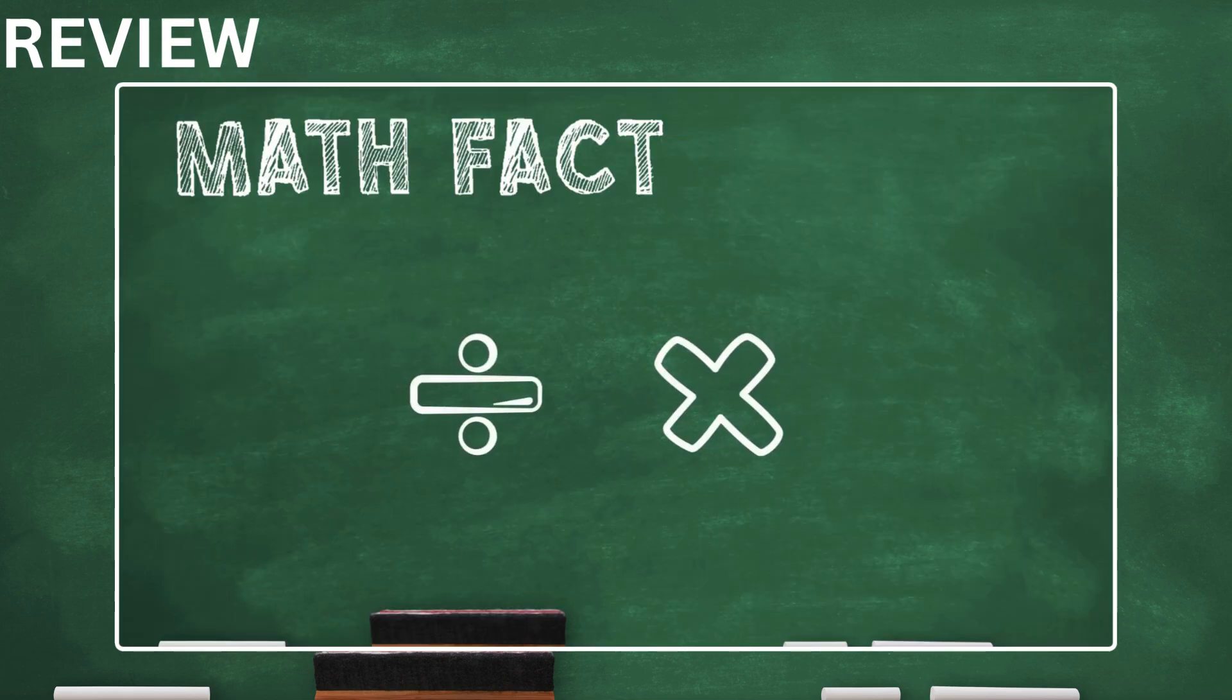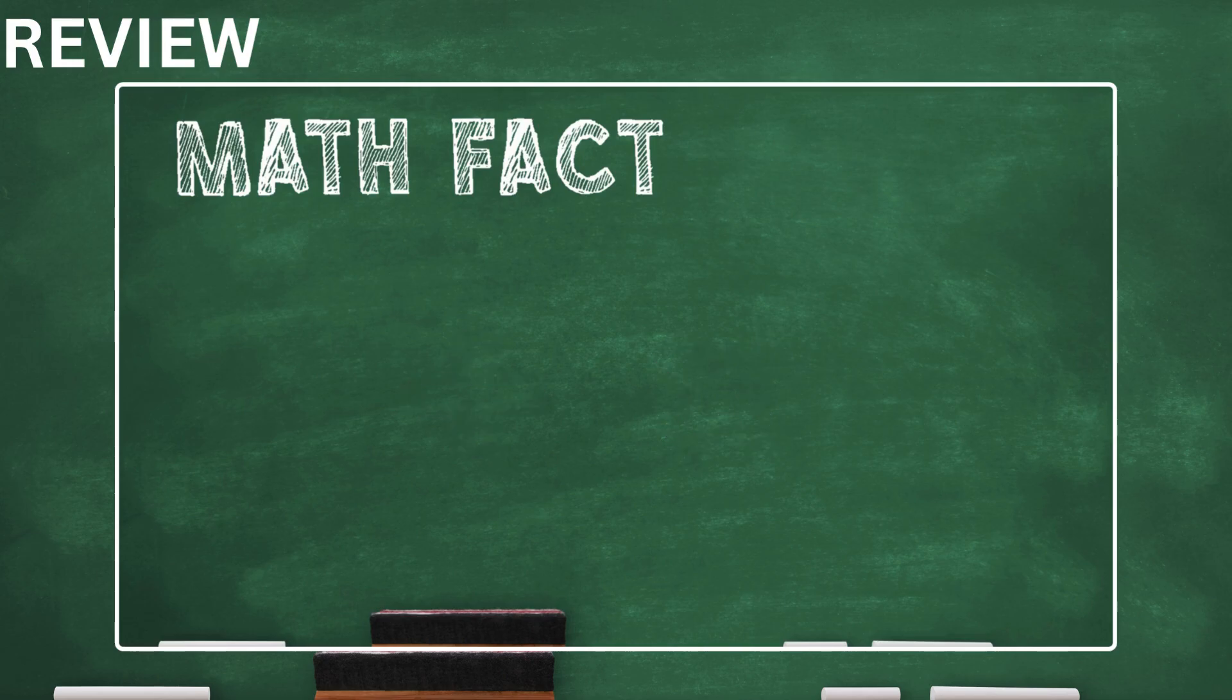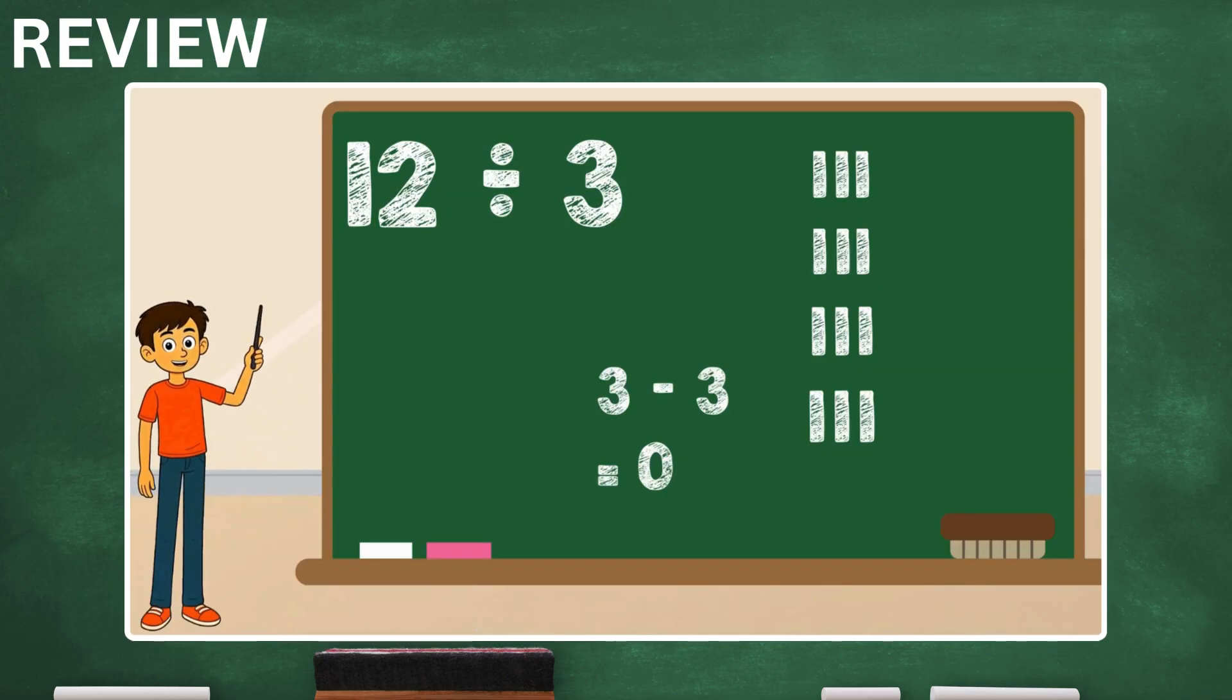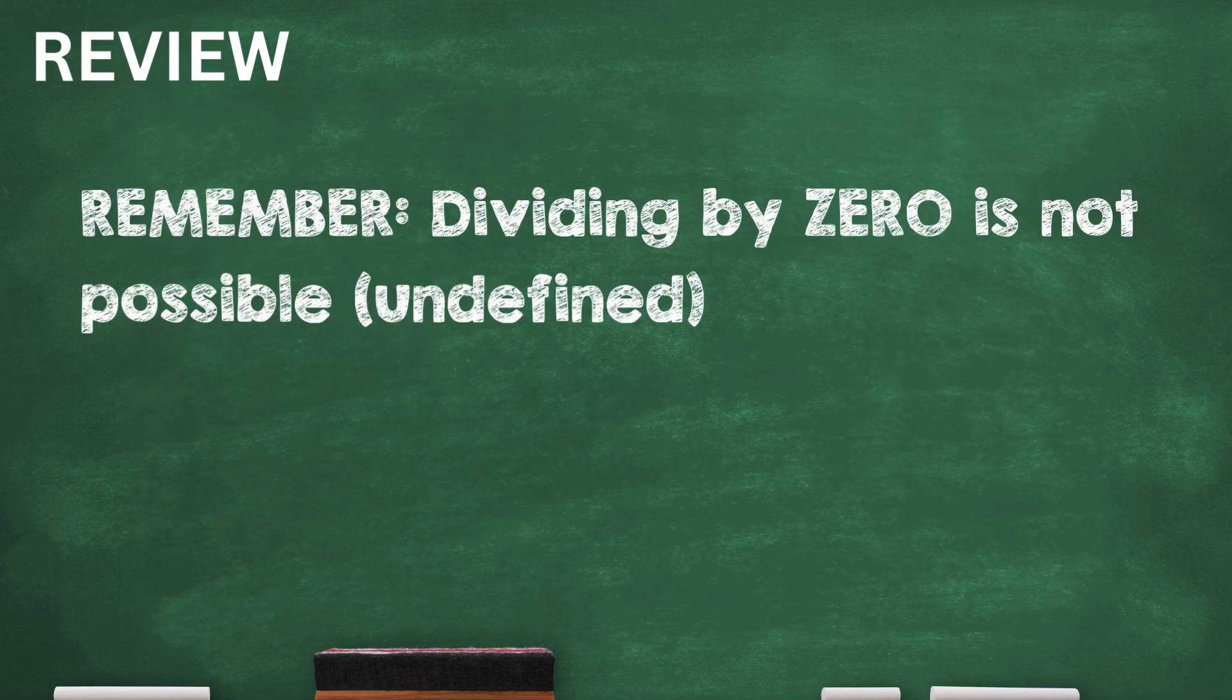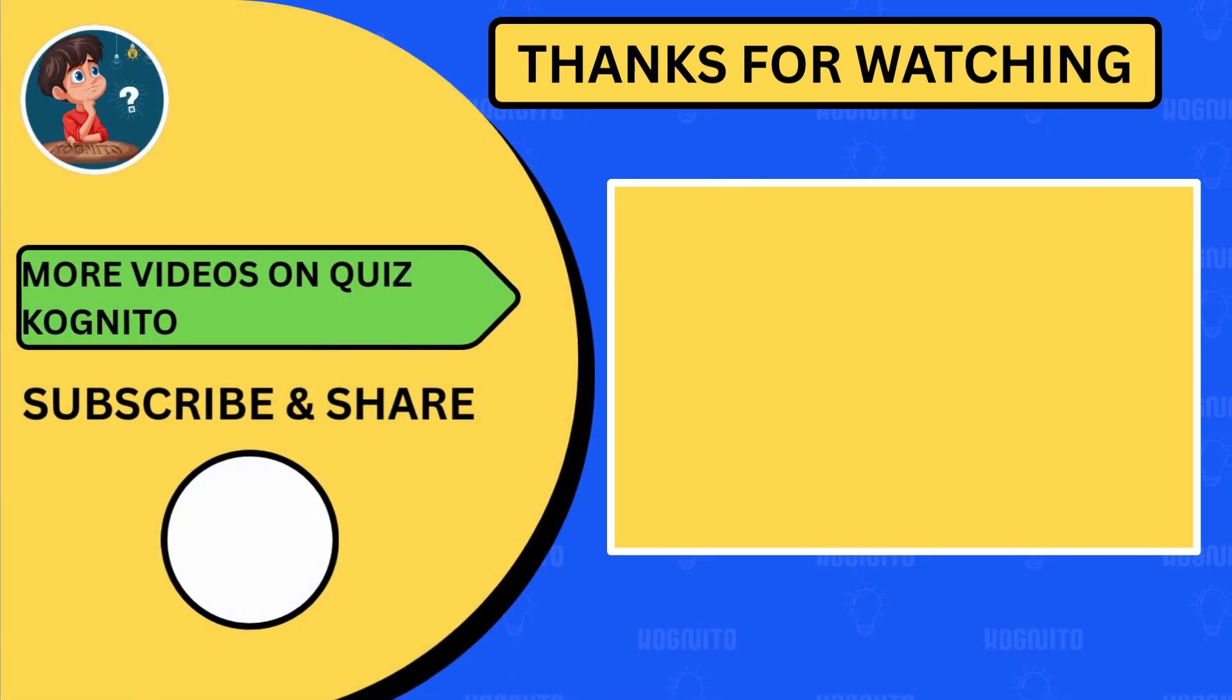Division and multiplication are opposites that help each other. Division can be shown through repeated subtraction. Sometimes it leaves remainders, and you can never divide by zero. That's the full picture of grade two division. You did it. You learned everything about how division works, how it connects to multiplication, and how to handle leftovers.